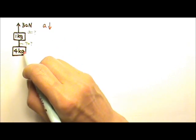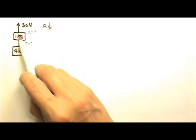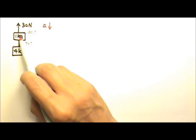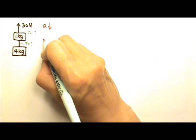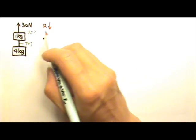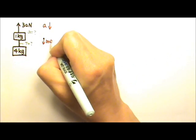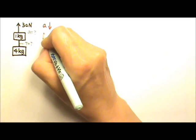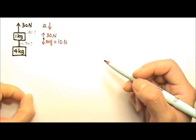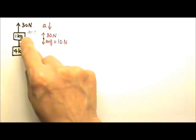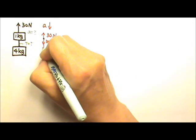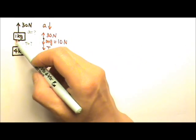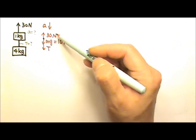Now we draw the force diagram. We have two boxes, so we draw the force diagram one box at a time. For the 1 kilogram box, draw a dot to represent it. There is the non-contact force mg, which is 10 newtons. The box is touching two things: the applied force of 30 newtons, and a string. A string can only pull, so this string pulls downward on the 1 kilogram — so the tension goes down.